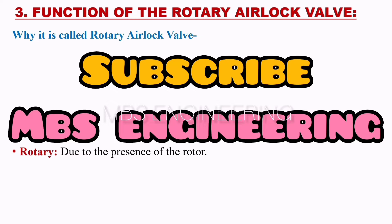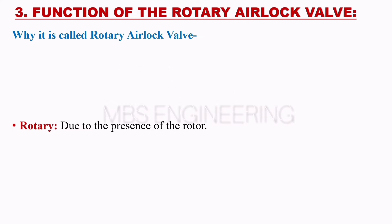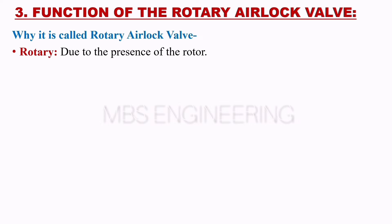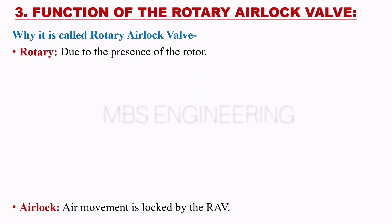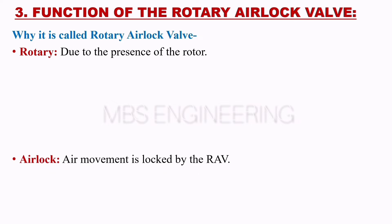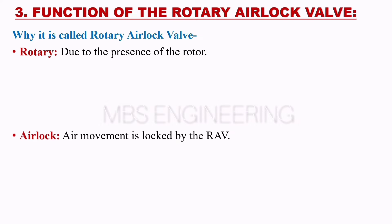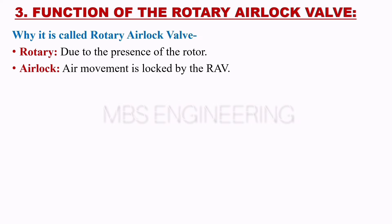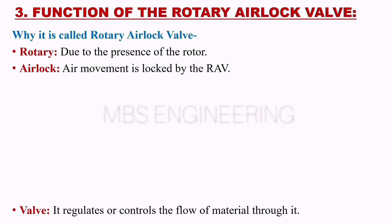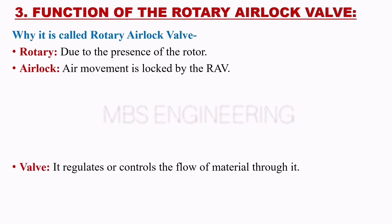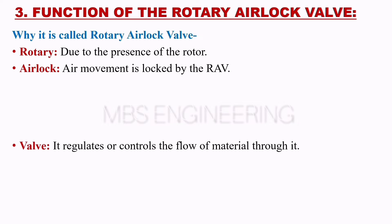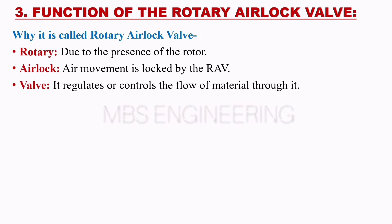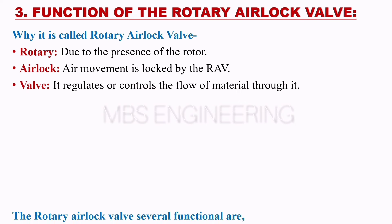The valve is called a rotary airlock valve for three reasons. 'Rotary' — due to the presence of the rotor. 'Airlock' — air movement is locked by the RAV. 'Valve' — it regulates or controls the flow of material through it.